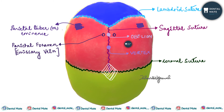In the fetal skull, there is a site at the junction of the sagittal and coronal sutures which is diamond-shaped; it is known as the anterior fontanelle. The triangular-shaped site present at the junction of the sagittal and lambdoid sutures is known as the posterior fontanelle.